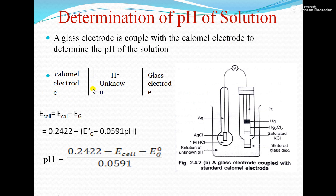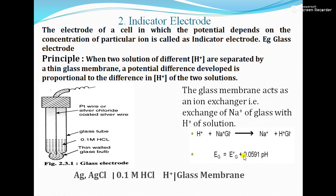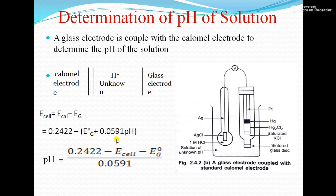The cell representation is: calomel electrode | salt bridge | H⁺ (unknown concentration) | glass electrode. The E_cell = E_calomel + E_G. Substituting E_calomel = 0.2422 V and E_G = E⁰_G + 0.0591 × pH, and rearranging for pH: pH = (0.2422 − E⁰_G − E_cell) / 0.0591. This is how pH of the solution is determined by coupling the glass electrode with the calomel electrode.